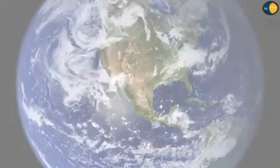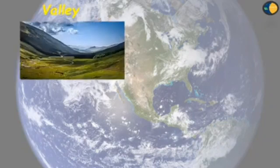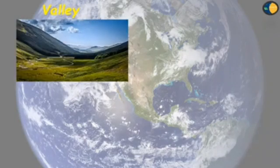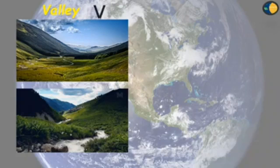The land of a valley is very good for growing crops. Next we have island. A piece of land surrounded by water on all sides is called an island. The weather of island is very pleasant.